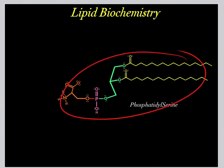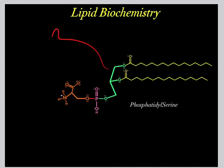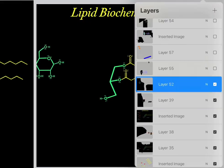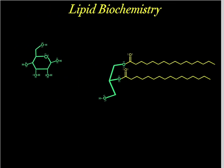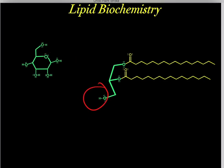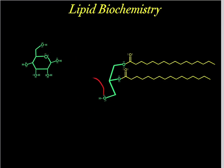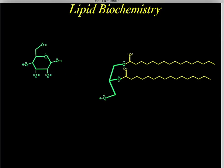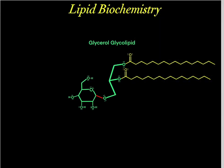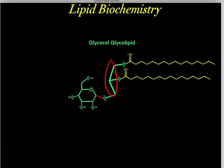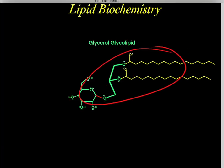Phosphatidylserine is another phospholipid that makes up our plasma membrane. However, instead of adding a phosphate to this third hydroxyl group, we can also add a carbohydrate to this third hydroxyl group. We essentially form a bond and break a bond, and when we do that, we form this product — this glycerol glycolipid.